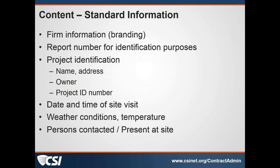On the next slide, we'll talk about some of the information that goes on to the form. Branding, the firm information, company logo, address, and contact information should always be on these reports. There should be a report number for identification purposes. The project information — name and address of the project, the owner, and your project ID number. Depending on the type of project and owner, you may end up having multiple project ID numbers. The architect's office will have a project ID number, and in North Carolina, state projects have their own state project ID number.